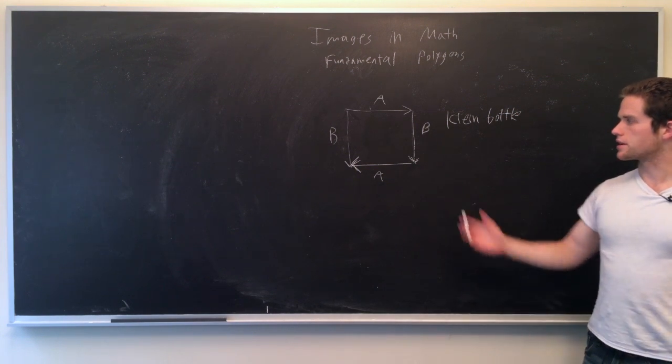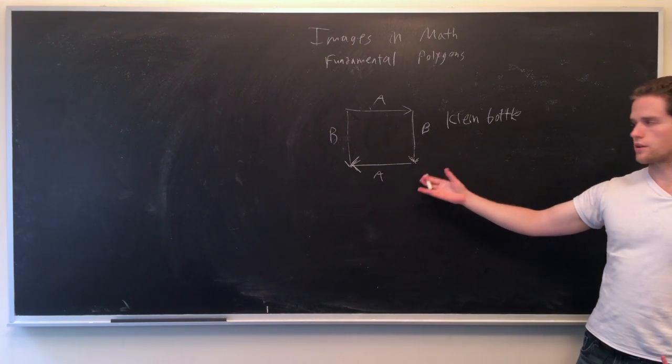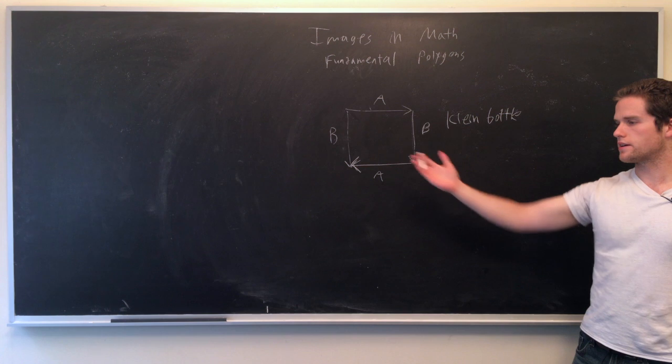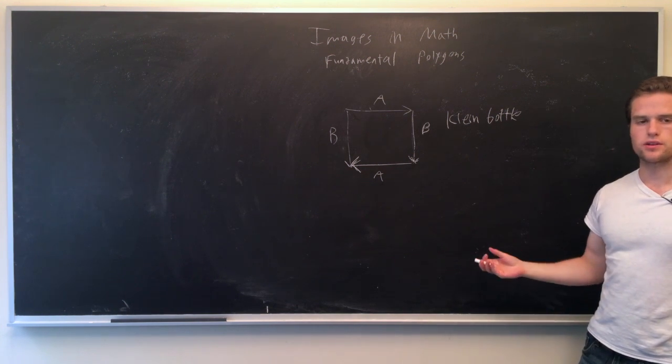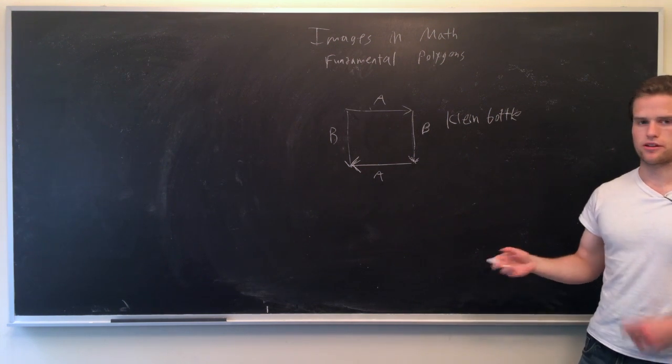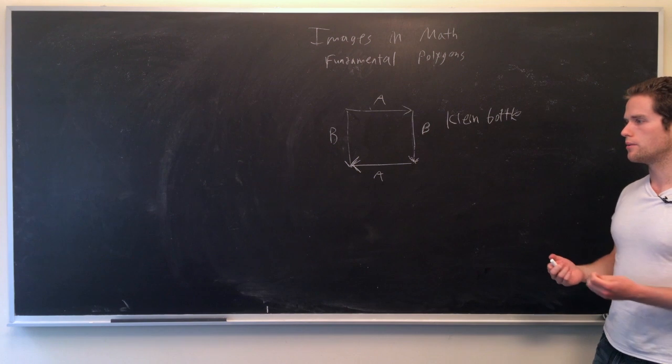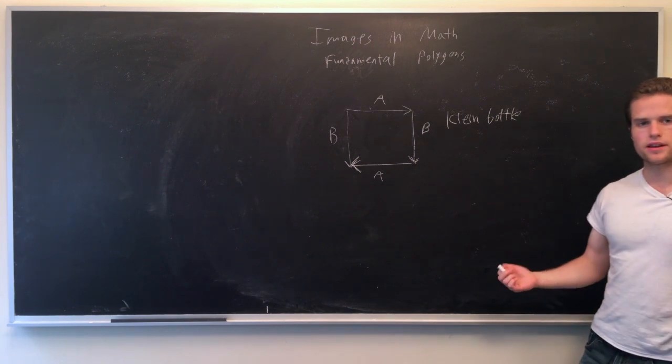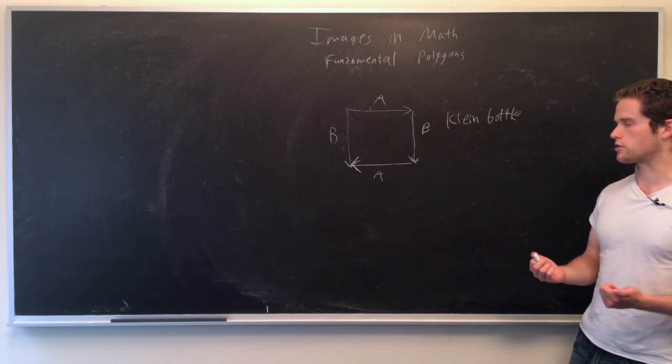So this figure here, this is called, it'll give us something called a Klein bottle, which we can see here. This also, like the real projective plane, cannot actually be embedded in three-dimensional space without intersecting itself. But there are common images of it in three-dimensional space just will be intersecting itself.